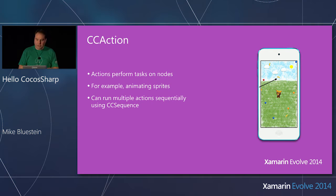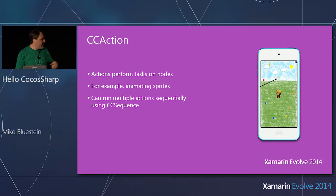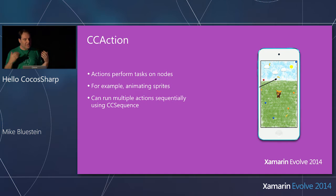We can use sprites directly through CC Sprite, or through sprite batches for more efficient loading. But just putting images on the screen isn't a game. This is really the place that CocosSharp starts to shine — these things called actions, available through the CC Action class. High-level gaming type things, and this one certainly has them in spades.